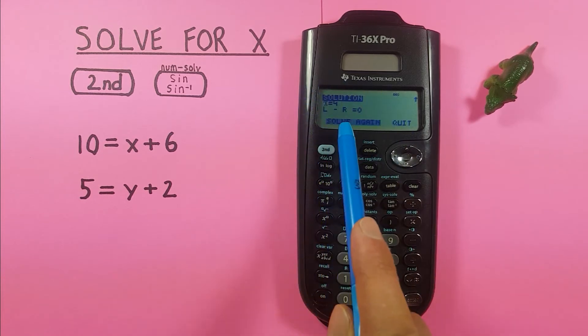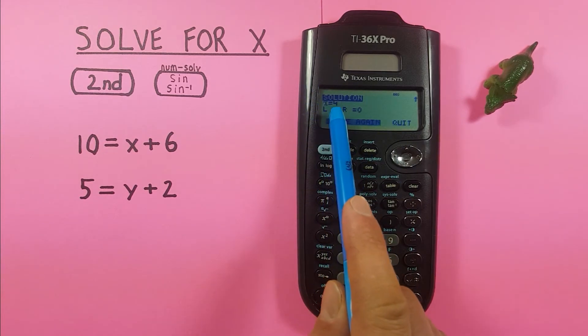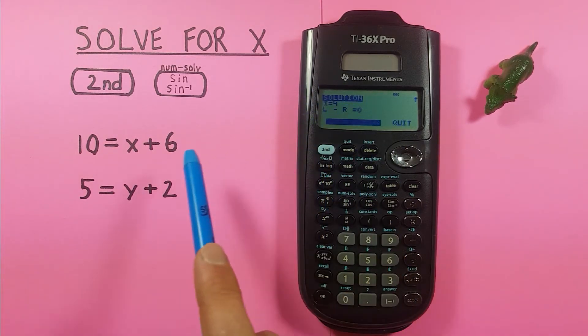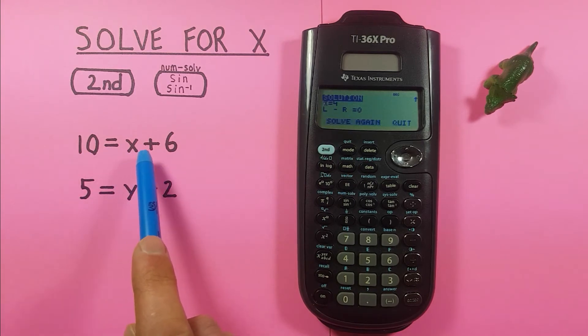And it'll give us a result. Here it says x is equal to 4, which makes sense because we know that 10 is equal to 6 plus 4.